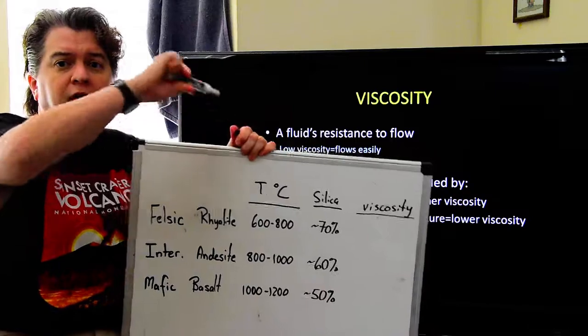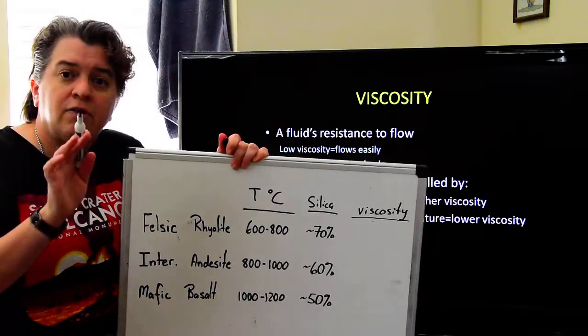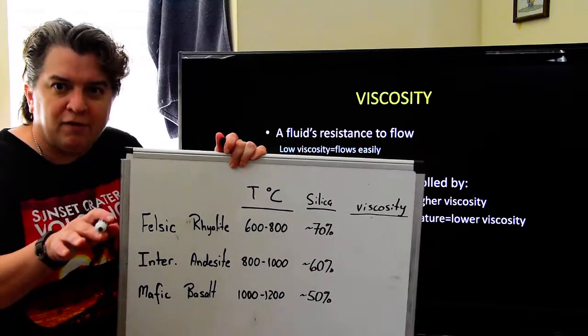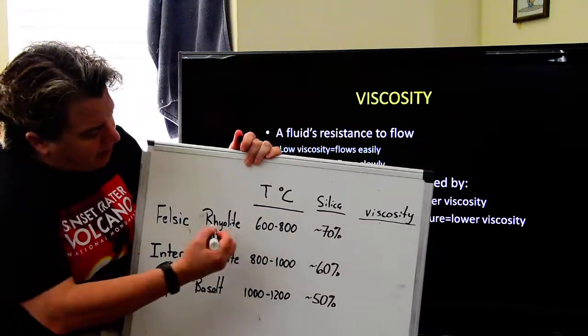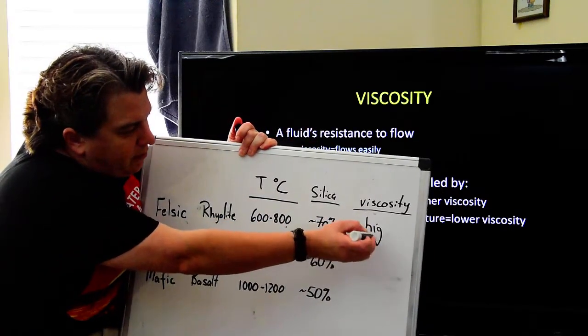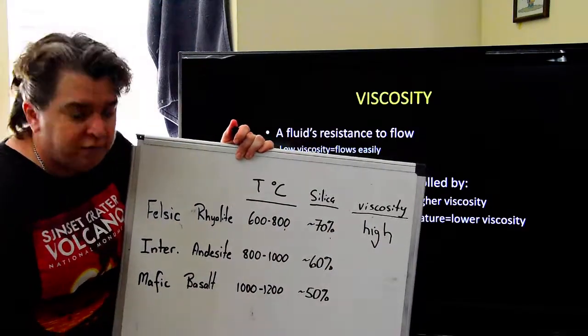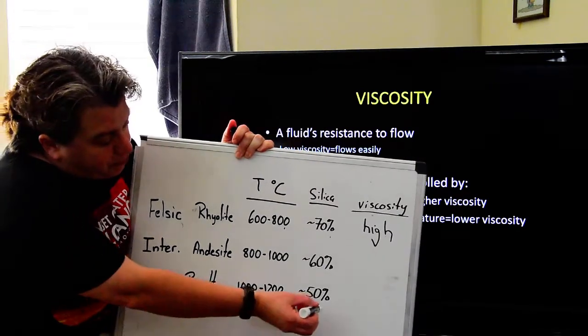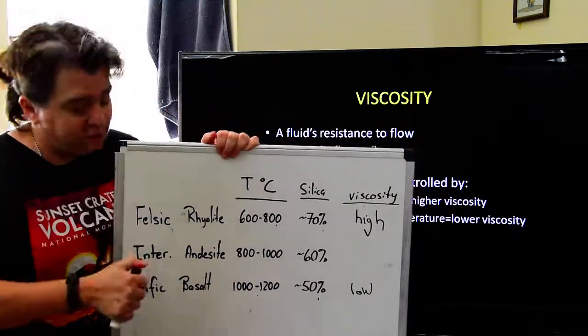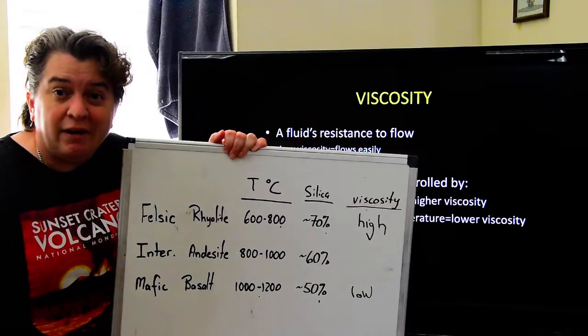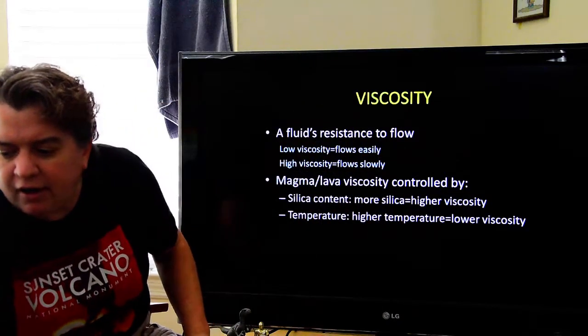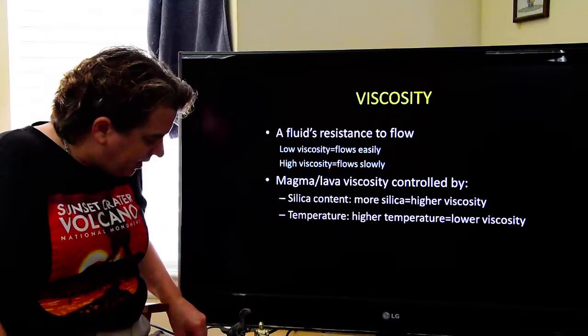So what's that tell us then about the viscosity? Who's going to have the highest viscosity? Well, remember, the higher the silica, the higher the viscosity. The lower the temperature, the higher the viscosity. So here we have rhyolite, low temperature, high silica, it's going to have high viscosity. Basalt erupts at the hottest temperature with the lowest silica. This is going to have low viscosity. And guess what? Andesite, it's intermediate. It's always going to be in the middle. So it has kind of medium viscosity.